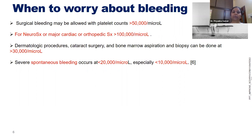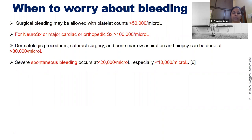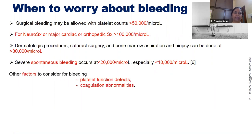It should not always need to be more than 1.5 lakh. For small procedures like cataract, dermatologic, or bone marrow procedures, more than 30,000 is sufficient. Even for bone marrow in ITP patients where platelet transfusions do not raise the count, we can proceed at 10,000–20,000. Severe spontaneous bleeding occurs only when counts fall to less than 10,000.